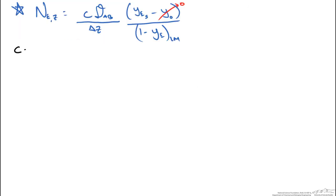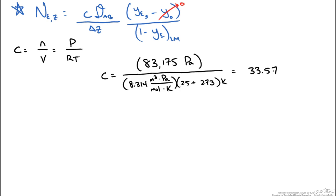We start by calculating the concentration of the gas using the ideal gas law. Concentration equals moles over gas volume, which equals P over RT. Plugging in values, we get a concentration of 33.57 moles per cubic meter, which converts to 3.357 times 10 to the minus 5 moles per cubic centimeter.